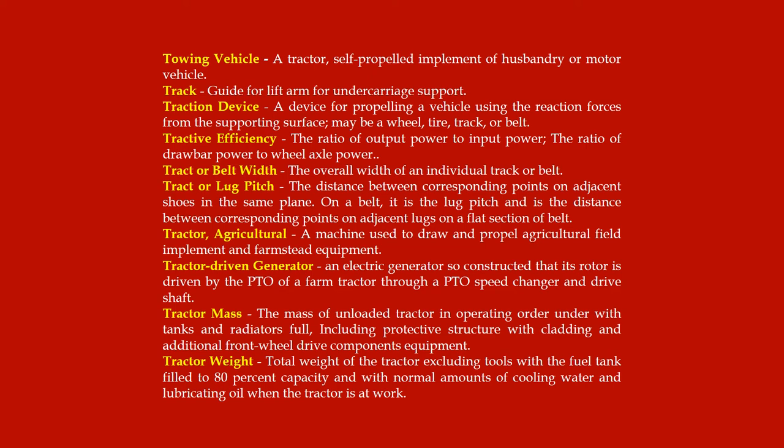Traction device: a device for propelling a vehicle using the reaction forces from the supporting surface; may be a wheel, tire, track, or belt. Tractive efficiency: the ratio of output power to input power; the ratio of drawbar power to wheel axle power. Tracked or belt width: the overall width of an individual track or belt. Tractor lug pitch: the distance between corresponding points on adjacent shoes in the same plane; on a belt it is the lug pitch, the distance between corresponding points on adjacent lugs on a flat section of belt. Tractor agricultural: a machine used to draw and propel agricultural field implements and farmstead equipment.